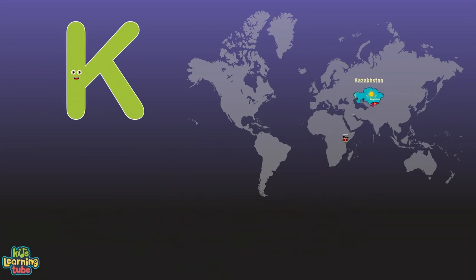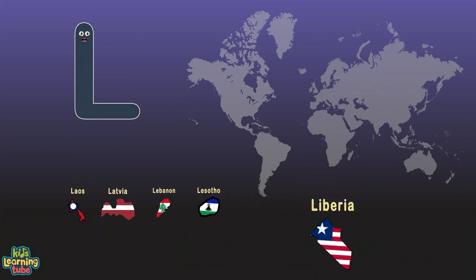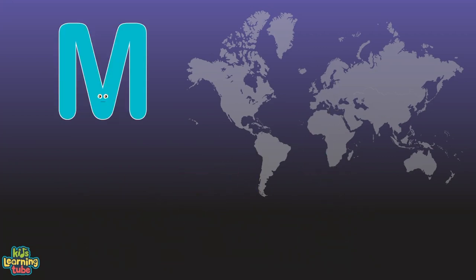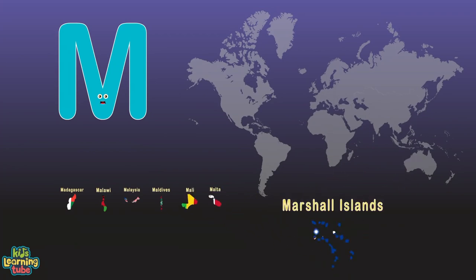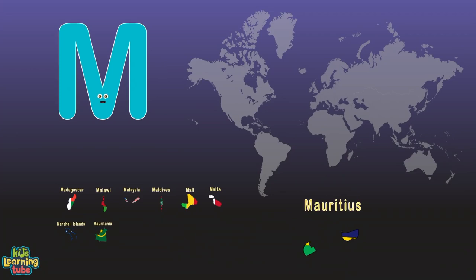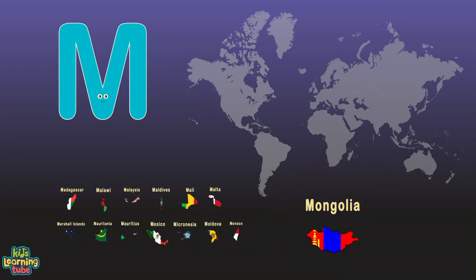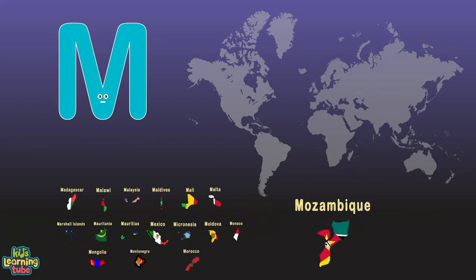L is for Laos, Latvia, Lebanon, Lesotho, Liberia, Libya, Liechtenstein, Lithuania, Luxembourg. M is for Madagascar, Malawi, Malaysia, and Maldives, Mali, Malta, Marshall Islands, and Mauritania. Mauritius, Mexico, Micronesia, Moldova, Monaco, Mongolia, Montenegro, Morocco, Mozambique, Myanmar.